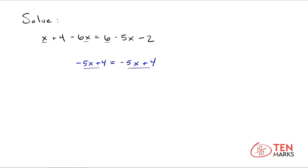Now let's simplify even further just to get down to variables. Subtract 4 from both sides of the equation. When you do that, you're left with negative 5x on the left and negative 5x on the right. And you can simplify this even further still by dividing both sides by negative 5. After you do that, you get down to x equals x.